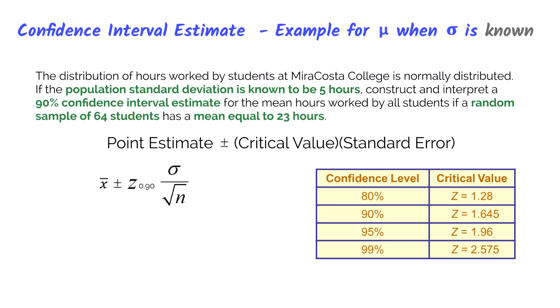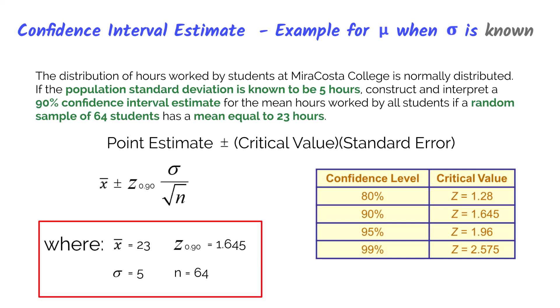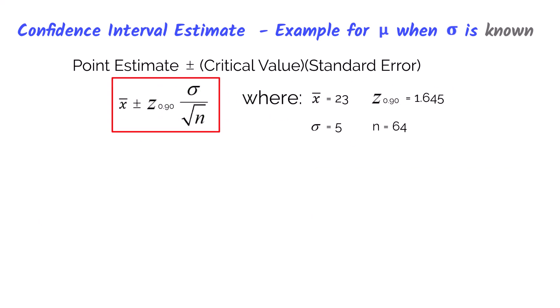Here's our example: The distribution of hours worked by students at MiraCosta College is normally distributed. The population standard deviation is known to be 5 hours. Construct and interpret a 90% confidence interval estimate for the mean hours worked by all students, given a random sample of 64 students with a mean of 23 hours. The point estimate is the sample mean of 23 hours. The critical z-value for a 90% confidence interval is 1.645. The population standard deviation is 5 hours and the sample size is 64.